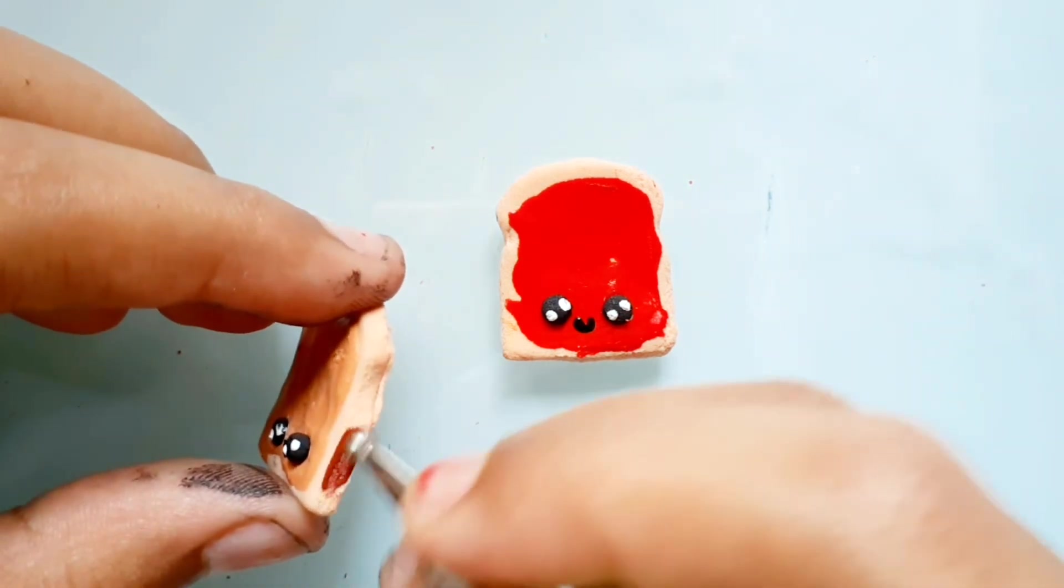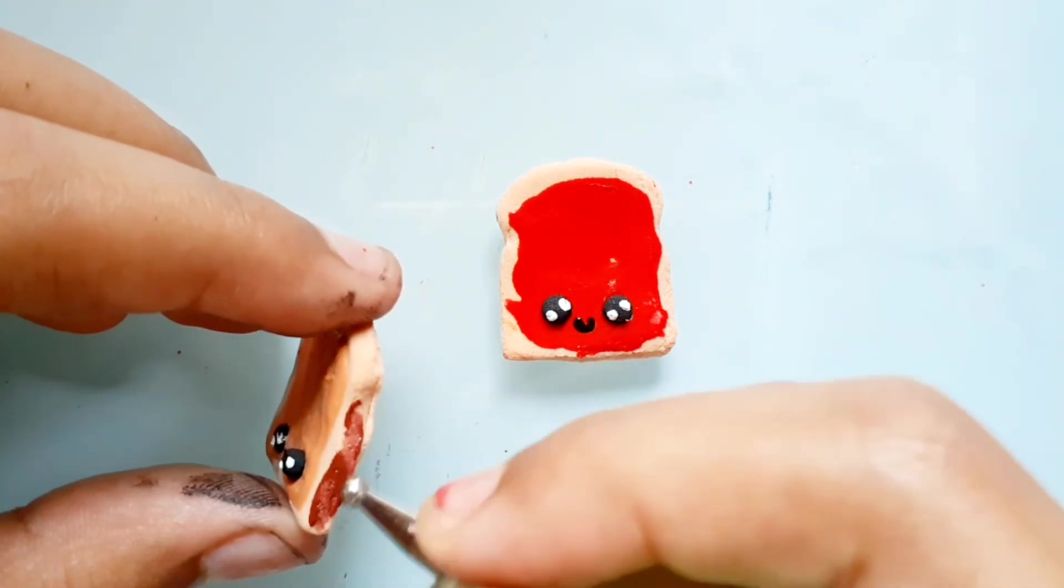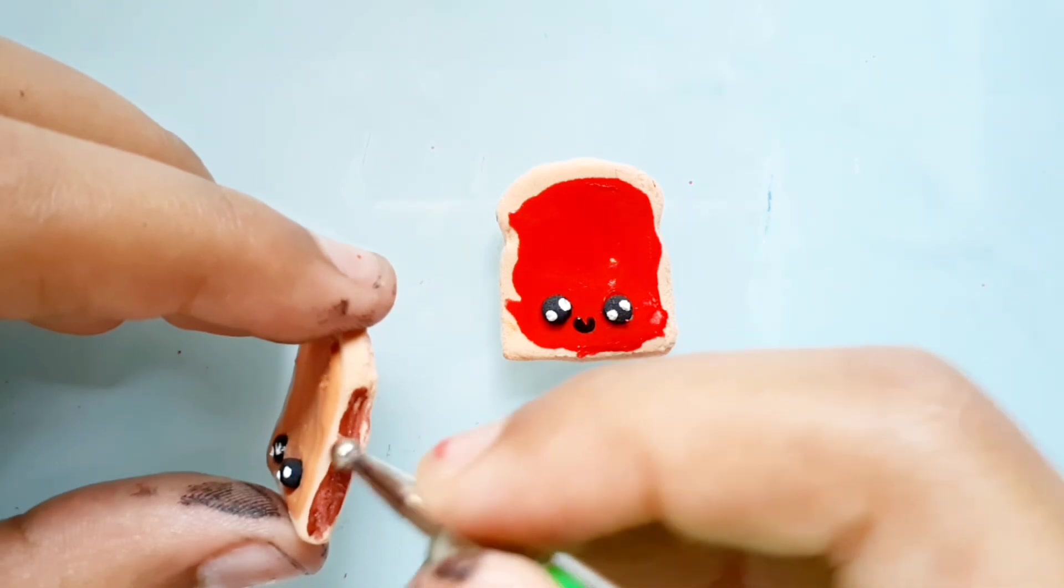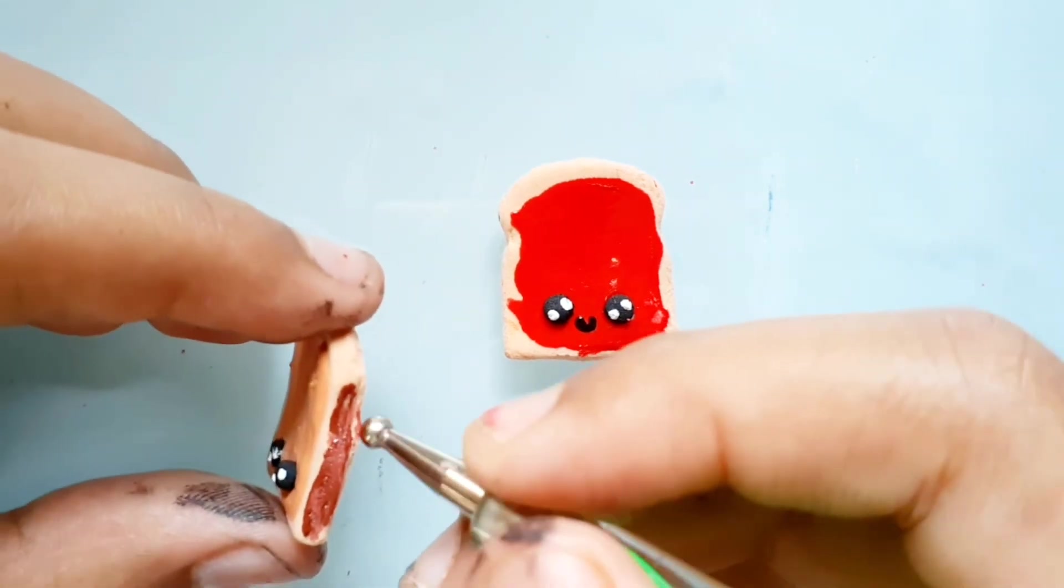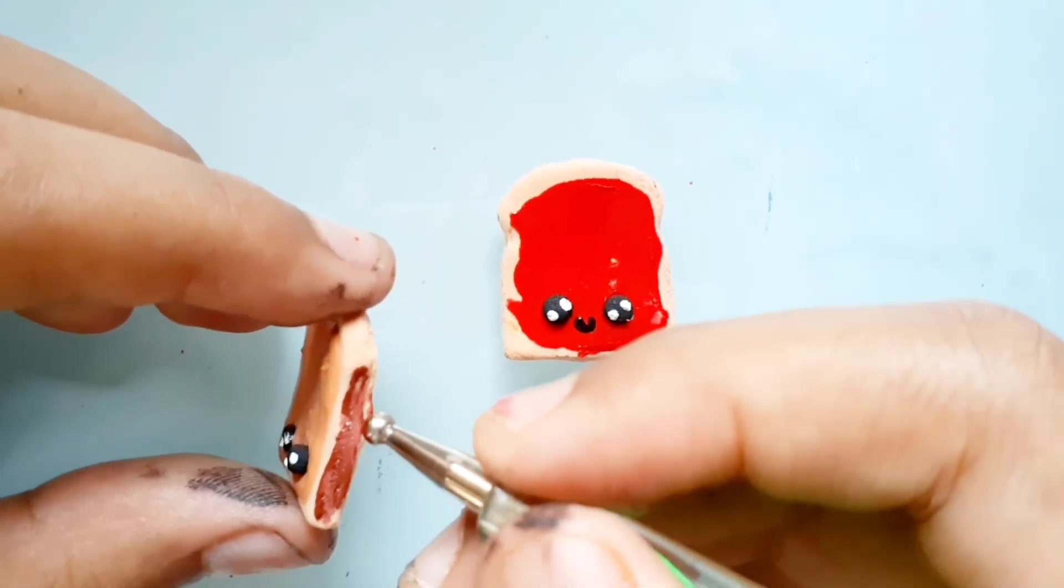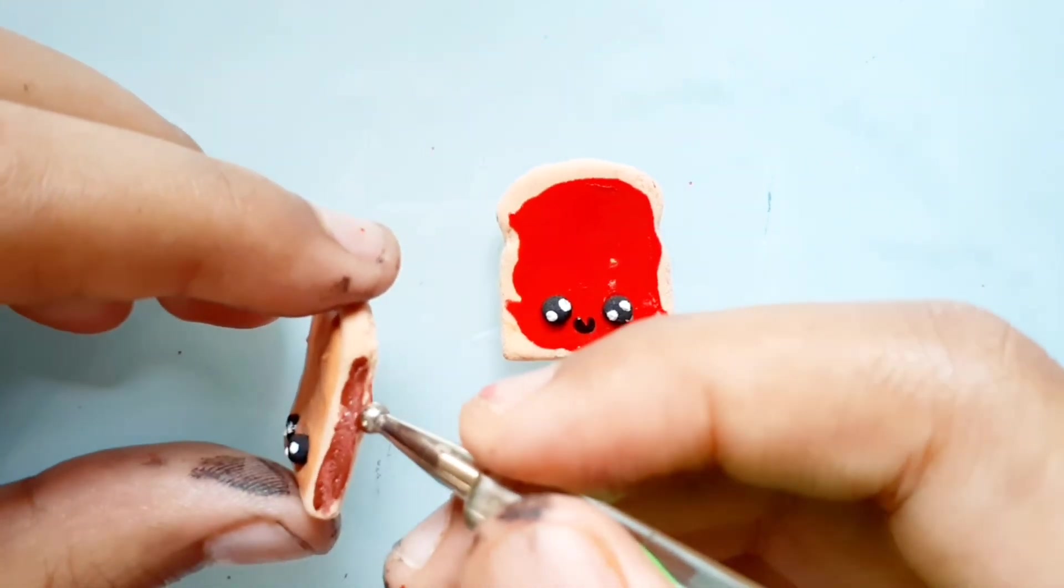Now take some brown color paint and put it on the sides of either or both the slices.